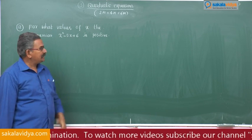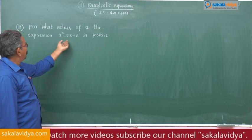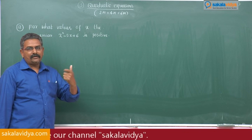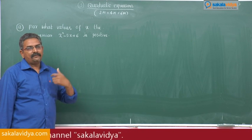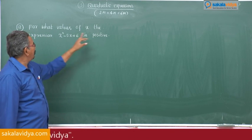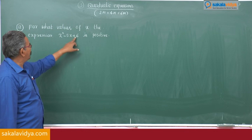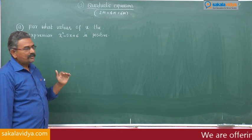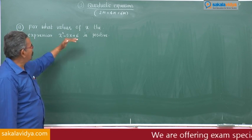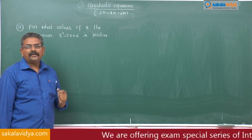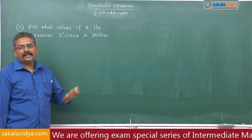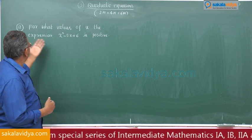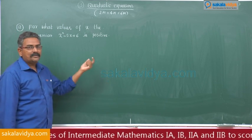This can be converted as a quadratic inequality. Positive means x squared minus 5x plus 6 is greater than 0. So if x squared minus 5x plus 6 is greater than 0, then we have to solve the quadratic equation to find for which values the expression becomes positive.